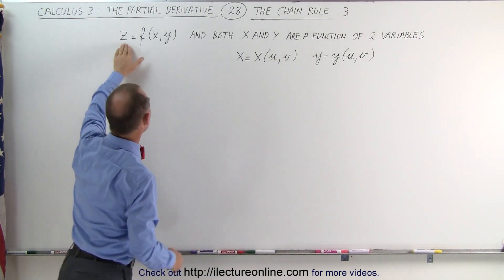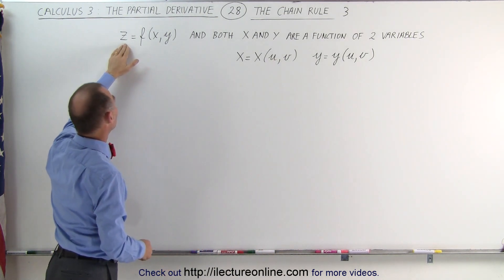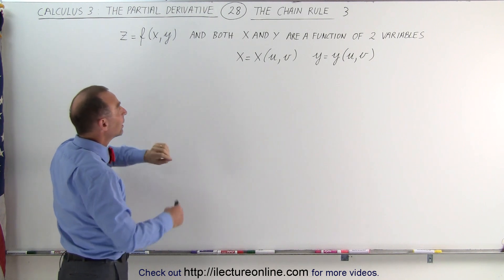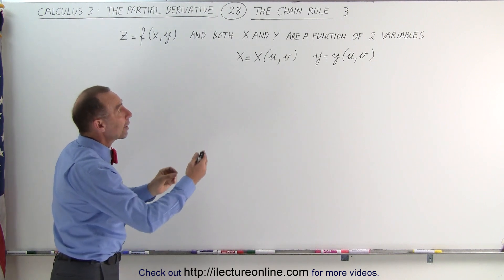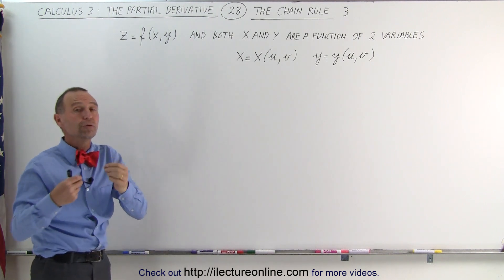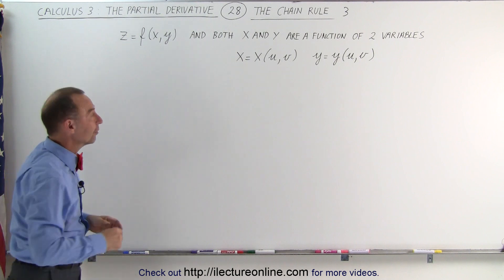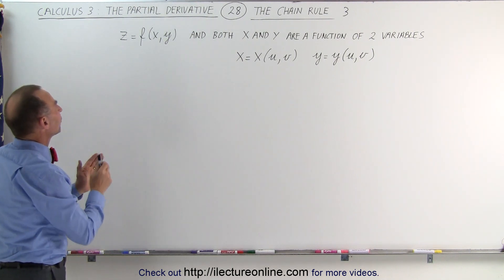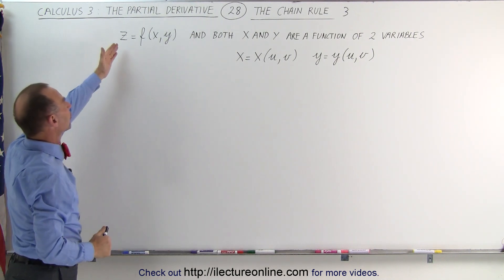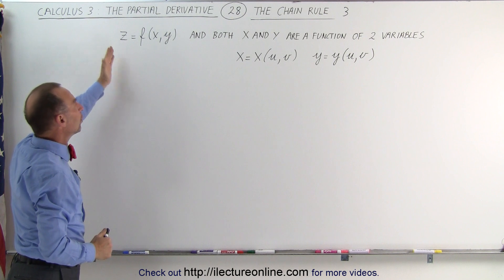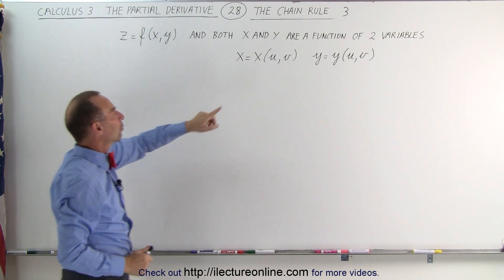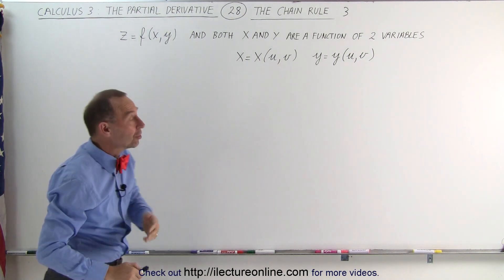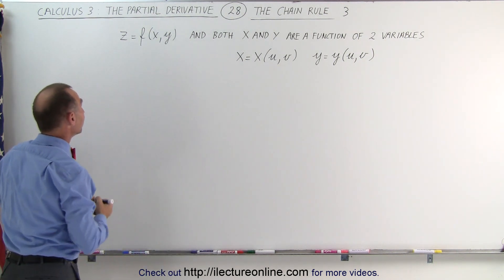Our initial function z is a function of both x and y, and then both x and y are themselves functions of two variables. So how do we find the partial derivative of the original function z with respect to both variables u and v? That's where we need the chain rule again.